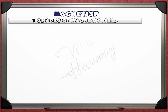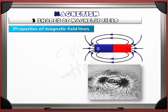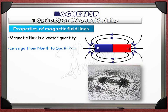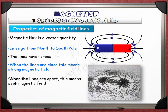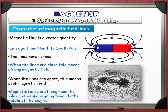Properties of magnetic field lines: magnetic flux is a vector quantity; lines go from north to south pole; the lines never cross; when lines are close together, this means a strong magnetic field; when lines are apart, this means a weak magnetic field; and magnetic force is strong near the poles and weakens towards the middle of the magnet.